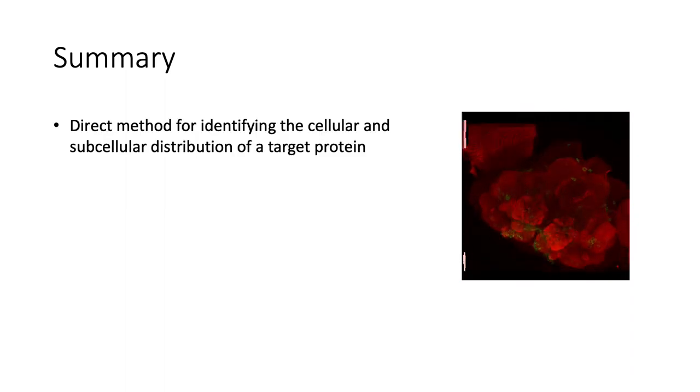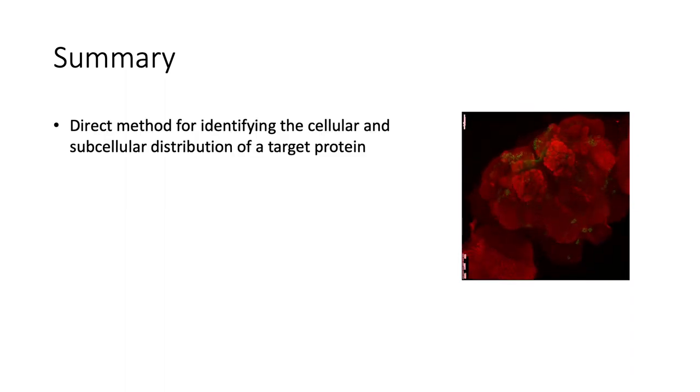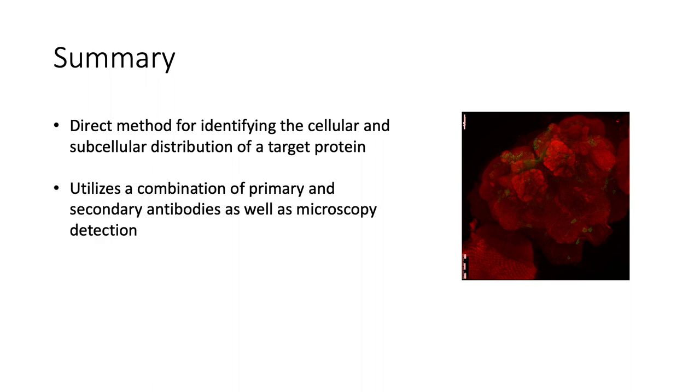In summary, immunohistochemistry is a direct method for identifying the cellular and subcellular distribution of a target protein. It utilizes a combination of primary and secondary antibodies, as well as microscopy detection. And this is a technique with a wide array of different applications, like for example, protein localization and understanding of the morphology of a specific tissue, as well as a wide array of different clinical applications.